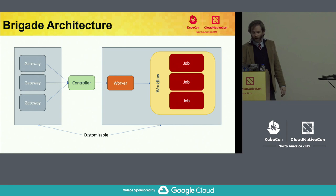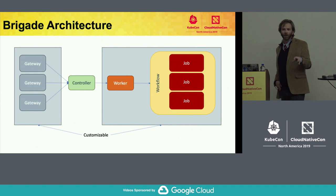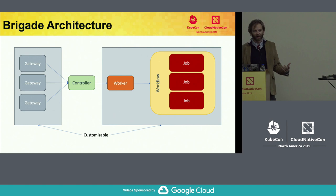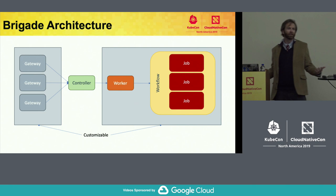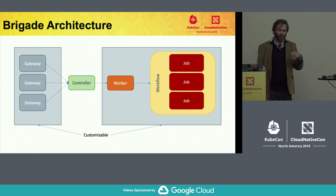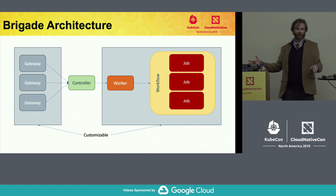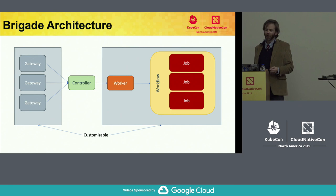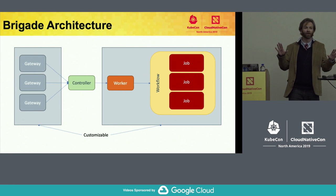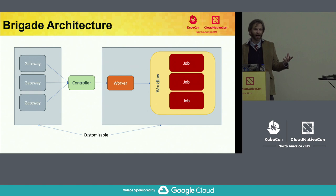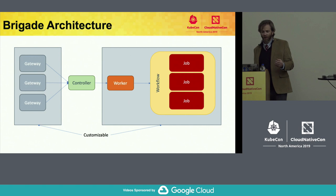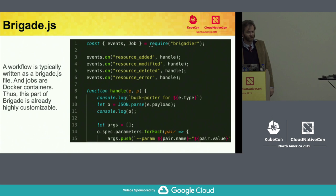One of our design goals in Brigade was to try and make as much of it pluggable and configurable as possible. The scripting language itself should be a full-fledged scripting language — you should be able to pull in dependencies from a package manager. We also wanted to make sure that gateways were easy to build and that the worker was at least swappable. Basically everything in the bluish-gray boxes are parts of Brigade that you could create your own, customize, or swap things in and out. At the end of the day, the controller is the only absolute must-have for Brigade to work.